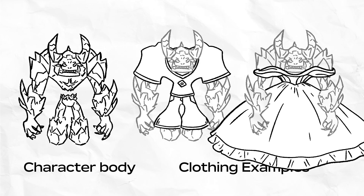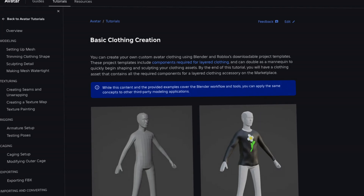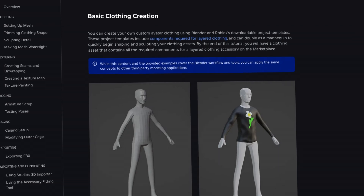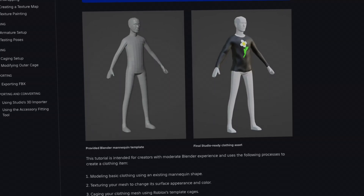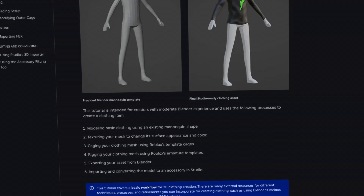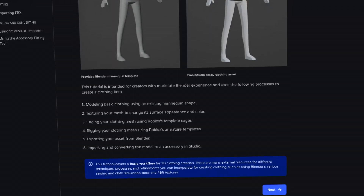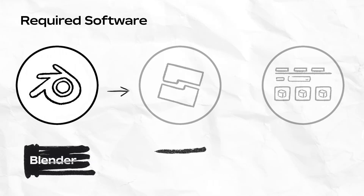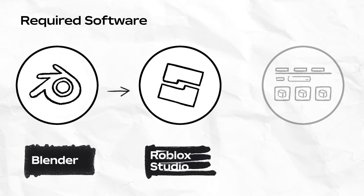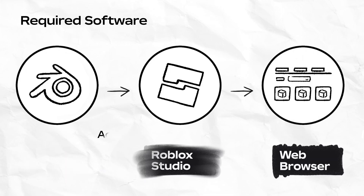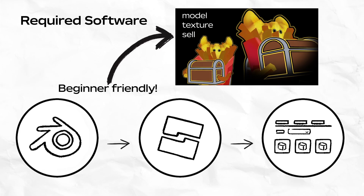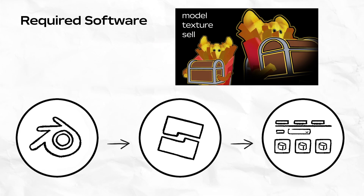This video quickly goes through every creation step, but a longer tutorial is available on our documentation, and you can refer to those resources for more details on each step. For this tutorial, you'll only need Blender, Studio, and a web browser, but keep in mind that creating clothing is more advanced than creating rigid accessories. I recommend watching the rigid accessory video first if you're new to Blender or Roblox user-generated content.